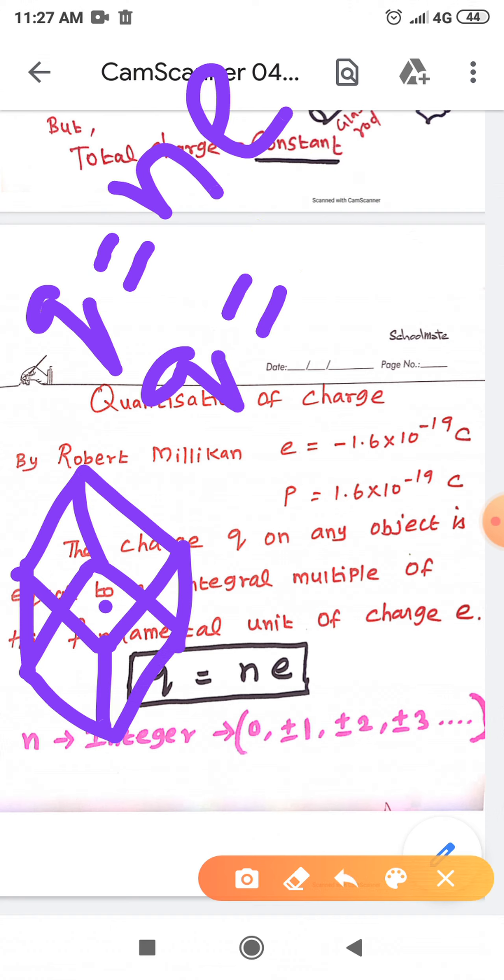Suppose this domain has 2 electrons, then N is equal to 2. Therefore Q is equal to 2 into E, which equals 2 into minus 1.6 into 10 power minus 19 coulomb. That will be the charge of this domain. If it is 3 electrons, it means 3E; 4 electrons means 4E. There is absolutely no possibility to have the charge value 1 by 2 E or 5 by 2 E, because N is an integer only.